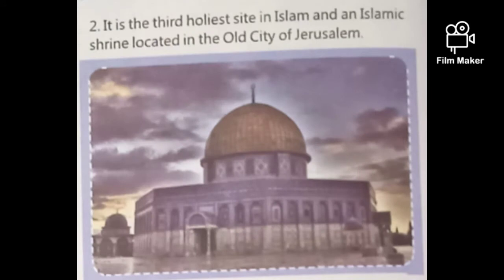Number two: it is the third holiest site in Islam and an Islamic shrine located in the old city of Jerusalem. Holiest site means the holiest place in Islam. It is an Islamic shrine and it is located in the old city of Jerusalem. This mosque's name is Al-Aqsa Mosque. Spelling: A-L-A-Q-S-A M-O-S-Q-U-E.